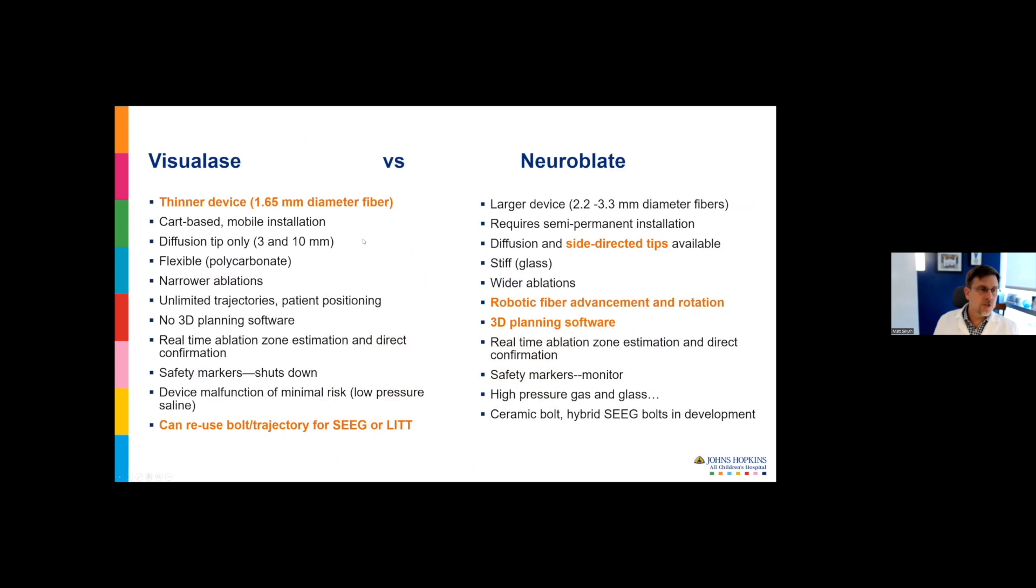To summarize differences between the two systems: the Visualase system is thinner, cart based and more mobile versus the permanent installation for Neuroblate. In terms of tips, Visualase has 3 millimeter or 10 millimeter ablation length, and Neuroblate has different diameters and the side fire plus diffusion tip. In my experience, the Visualase heats tissue more quickly, but doesn't expand as far as the Neuroblate. The Neuroblate takes longer to get to your target ablation volume but makes larger lesions.